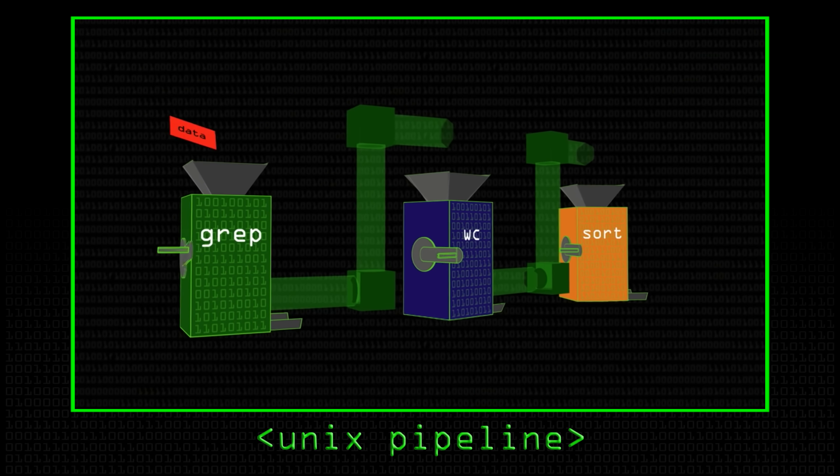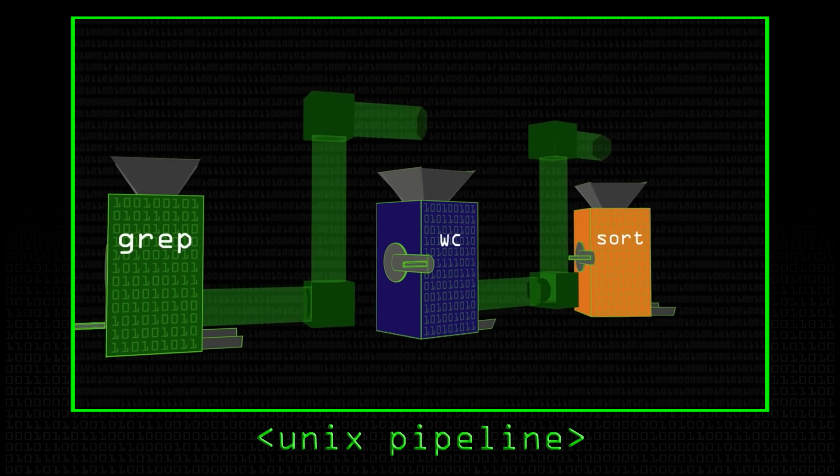Today we'll talk about grep, a well-known command in the Unix world that's been around since the early 1970s. What grep lets you do is search for arbitrary patterns of text in one or more files. There could be an unbounded number of input files, or the input could be coming from some other program — for example, via the Unix pipeline. No matter the amount of input, grep can filter out or show you the things you're interested in.